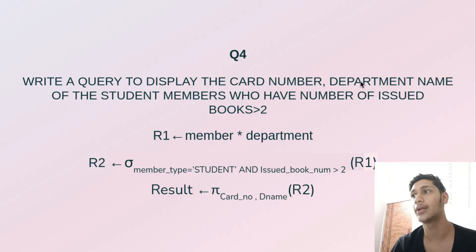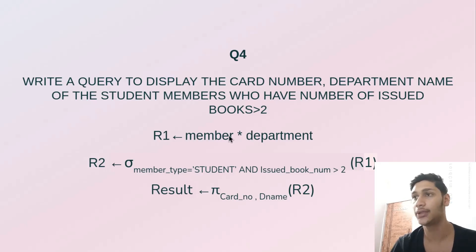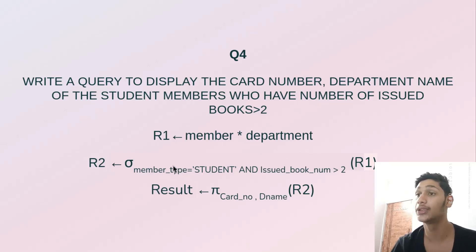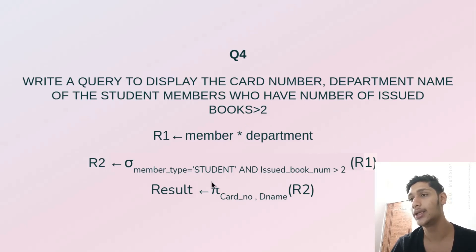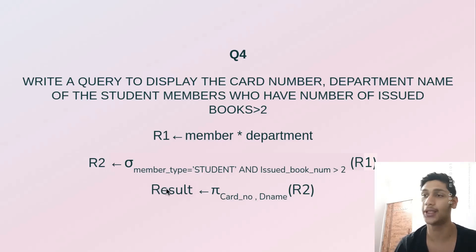In the fourth problem, write a query to display the card number and department name of student members who have number of issued books greater than two. We perform a natural join between the member and department tables, extract all values with member_type as 'student' and issued book number greater than two, then select card_number and dname from r2 as the result.